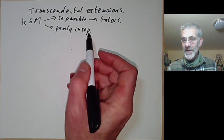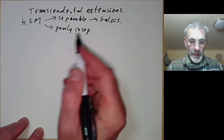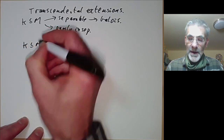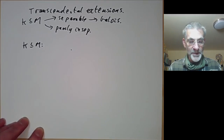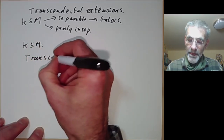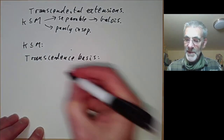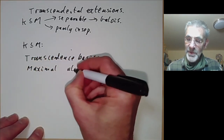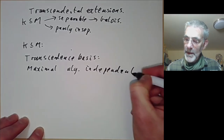Purely inseparable extensions — frankly, the less said about them the better. So suppose we've got a transcendental extension. What we want to do is talk about how to study this. What we do is we find a Transcendence Basis. A Transcendence Basis is a maximal algebraically independent set.